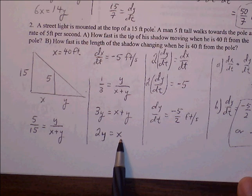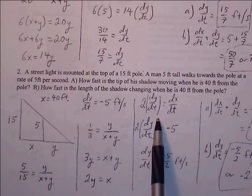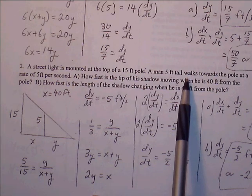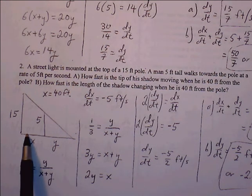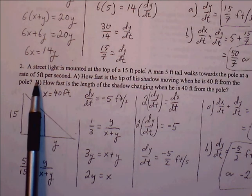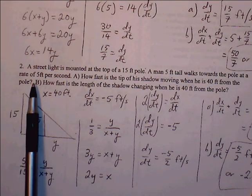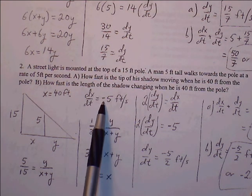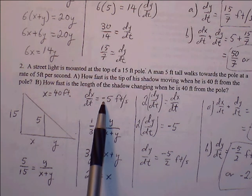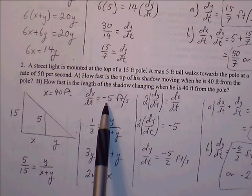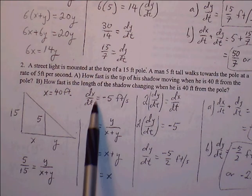Let's do Example 2. A street light is mounted at the top of a 15-foot pole. I'll set up the similar right triangles the same way. A man 5 feet tall walks towards the pole at a rate of 5 feet per second. We have the 5-foot person and the 15-foot pole. Y represents the base of the small triangle, and x represents the remaining portion of the base of the large triangle.